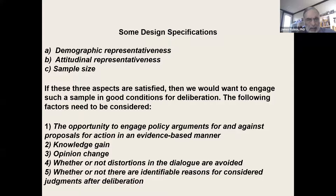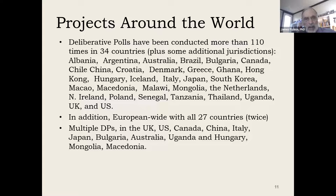We have a paper accepted by the British Journal of Political Science looking at a large number of deliberative polls and even larger number of small groups — as many as a hundred small groups in the climate change project — and we find no pattern of the more advantaged imposing their views on the less advantaged. Everybody is participating equally. We have now conducted 115 projects in over 34 countries, on every inhabited continent — including Africa: Ghana, Uganda, Senegal, Malawi, Tanzania — as well as in Asia and European-wide.